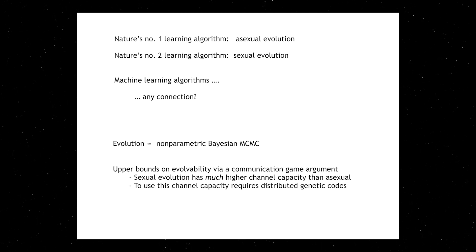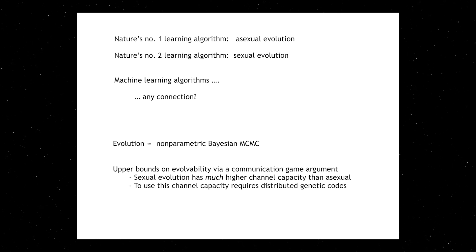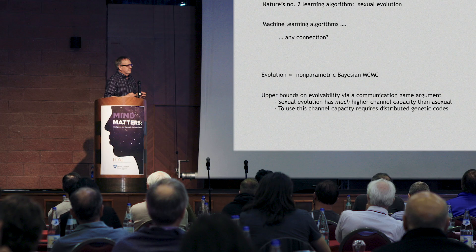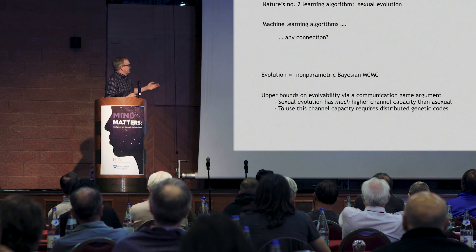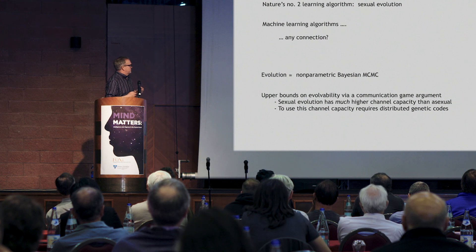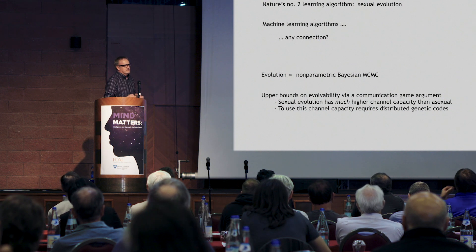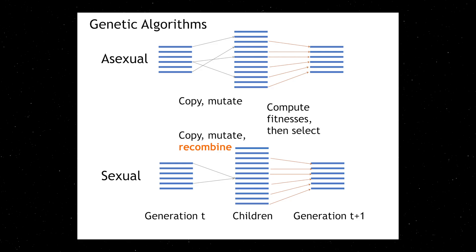I'm going to talk about maybe some basic informational considerations about genetic codes. And then I'm going to move on to try to make a connection between sexual evolution and an aspect of machine learning called nonparametric Bayesian Markov chain Monte Carlo. These are these two algorithms.